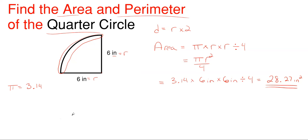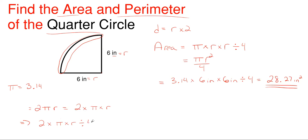The circumference — the curved part — for an entire circle is 2 times pi times r. Since we only want a quarter of that, the quarter circle's curved portion is 2 times pi times r divided by 4, which simplifies to pi times r divided by 2. That full-circle formula is for the full circle; this simplified one is for the quarter circle.